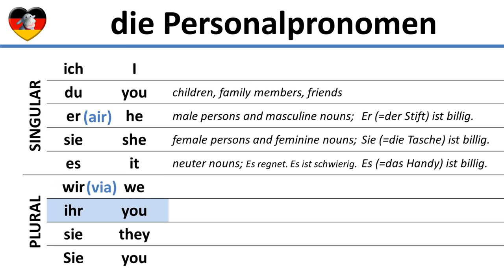Ihr is the plural of du. So it is used to address two or more children, or two or more persons we know well, like friends or family members. We wouldn't use ihr with people that we would address using ladies or gentlemen. Note that the pronunciation is close to the British pronunciation of the word ihr — the r at the end is not pronounced.